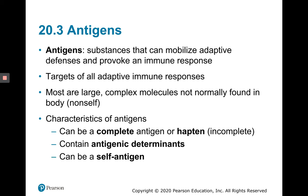Antigens themselves are just substances that can mobilize an adaptive immune response. They can provoke not only an immune response but different types of immune response because they generally contain different antigenic determinants. They can be complete or incomplete antigens, and they're generally the targets of all adaptive immune responses. Most antigens are large, complex molecules that are not normally found in the body.